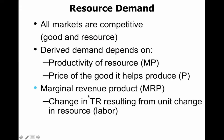Remember that demand for resources is derived — meaning nobody wants me the way they want a product. They want what I can do, which means the productivity of the resource, my marginal product, is going to be important. Even more important is what I can do times what the market is willing to pay for it. The change in total revenue resulting from a unit change in the resource — when you add one additional laborer, how much additional revenue is earned — that's the most common example.